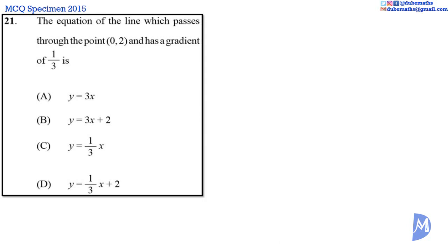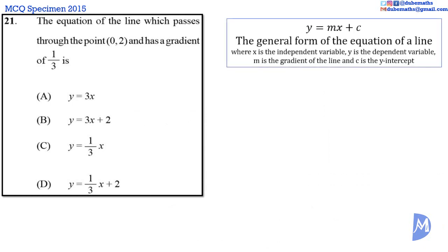Question 21. The equation of a line has the general form Y = MX + C, where X is the independent variable, Y the dependent variable, M the gradient, and C the Y-intercept. We are given that the gradient is 1/3 and that the point (0, 2) lies on this line.